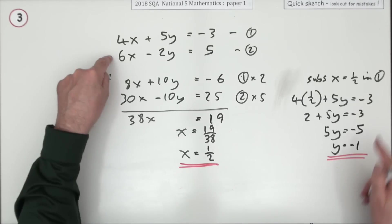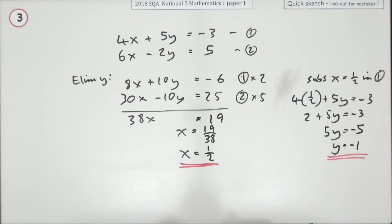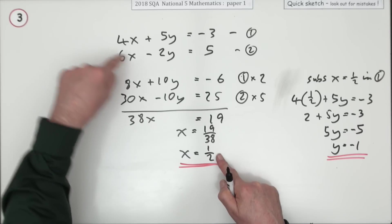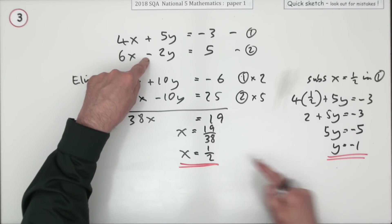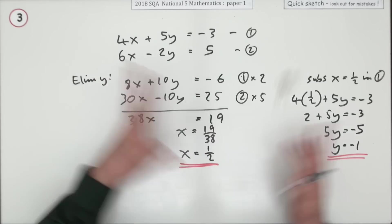And you should always check it in the one that you didn't use in this part. This says 6 halves are 3. Negative 2 times negative 1 is a plus 2. 3 plus 2 is 5. So all is well.